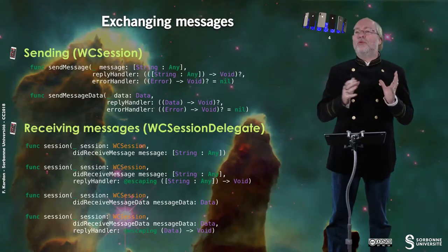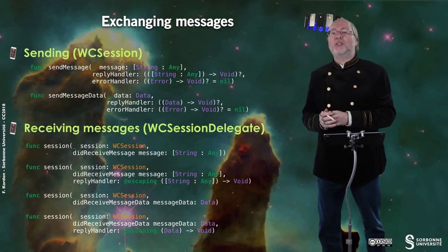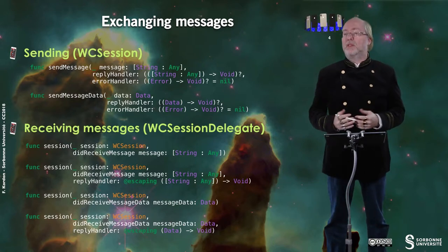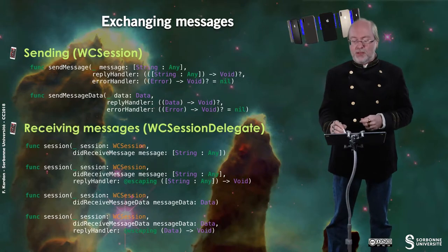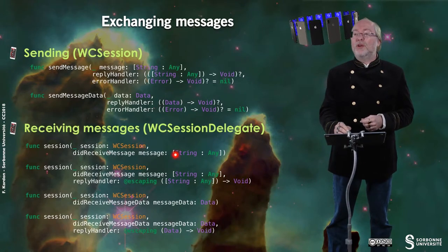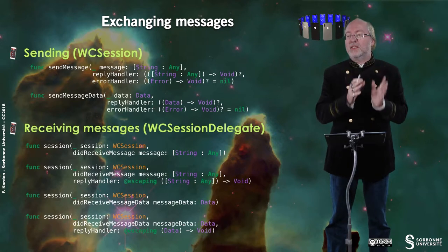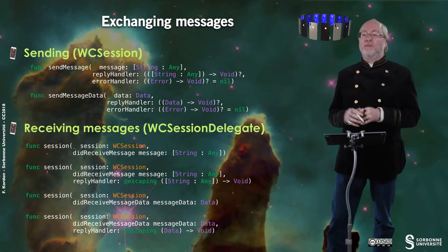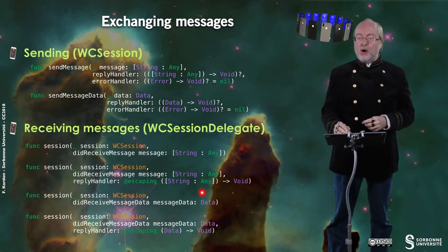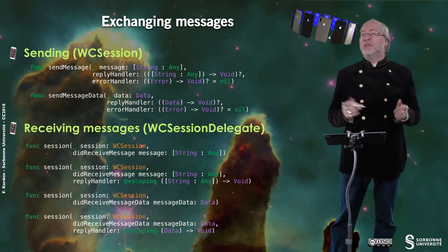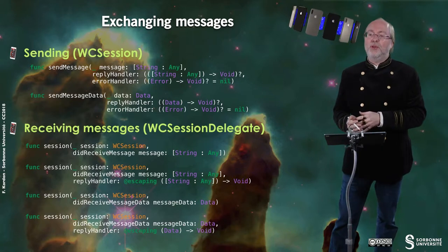When you receive messages you work with WCSessionDelegate, which invokes several methods you can implement according to your needs. You have methods that provide you with a dictionary with String keys and Any values, or you can receive Data (NSData in Objective-C). Then you deserialize this information.